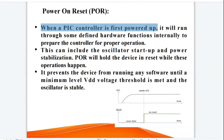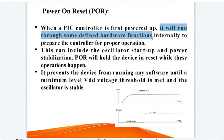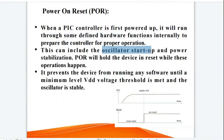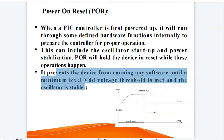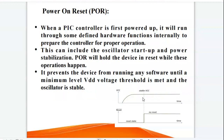Power on reset. When a PIC microcontroller is first powered up, it will run through some defined hardware functions internally to prepare the controller for proper operation. These operations include oscillator startup and power stabilization. POR will hold the device in reset while these operations happen. It prevents the device from running any software until a minimum VDD voltage threshold is met and the oscillator is stable. When the PIC controller is powered up, it will take some time to reach stable VCC, and the POR power on reset will hold the device in reset until stable VCC is achieved.